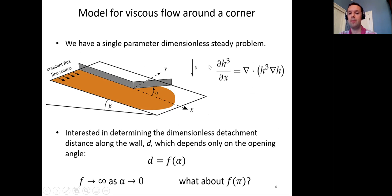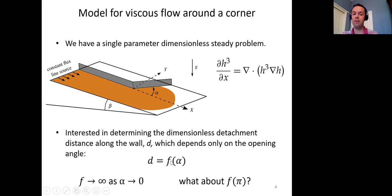This is a single-parameter model because the governing equation and boundary conditions only depend on the opening angle α. We're interested in determining how far, in steady state, the flow detaches from the wall — calling this dimensionless distance d — and finding d as a function of α. We can already note that f must go to infinity as α → 0, because as the wall approaches the x-direction the detachment moves further downstream, and with a straight wall along the x-axis there would be no detachment. We're also interested in what happens as α → π: how far up the other side of the wall does the fluid run.